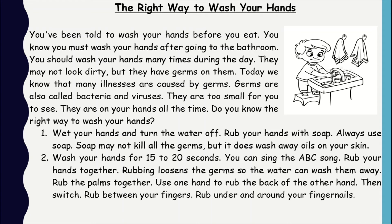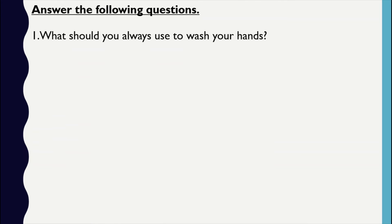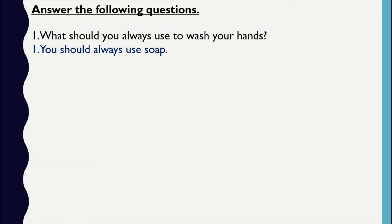Now you can pause the video and give yourself time to read the text on your own before answering the questions. Now let's start reading the questions and answering them. Number one: what should you always use to wash your hands? We're going to use a keyword in the question and search for it in the text. You'll find the answer in the second paragraph, first line — it tells you to always use soap. So the answer is: you should always use soap.